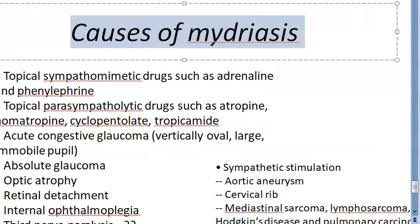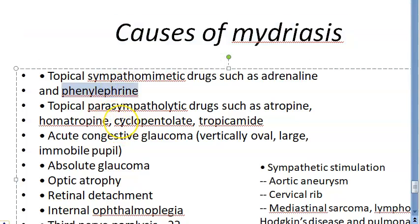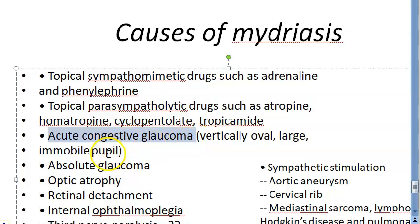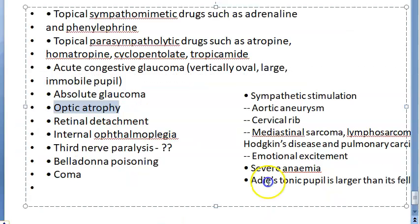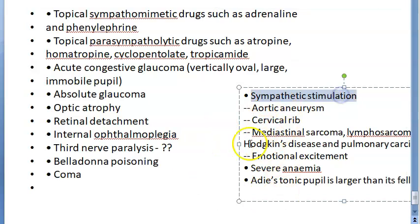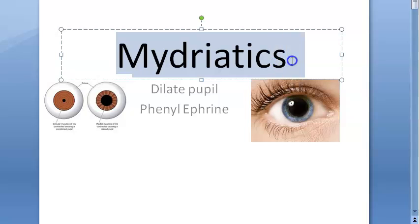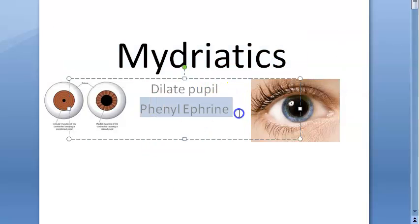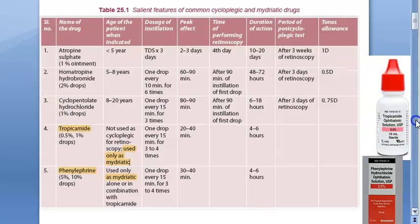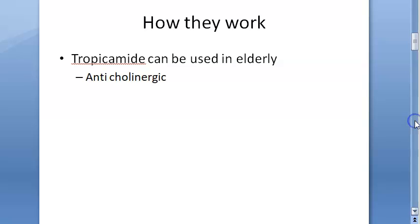Mydriasis can be caused by many things, not just drugs. It can be caused by sympathomimetic drugs like adrenaline and phenylephrine, parasympatholytic drugs like atropine, homatropine, cyclopentolate, and tropicamide. It can also be caused by acute congestive glaucoma, absolute glaucoma, retinal detachment, sympathetic stimulation, emotional excitement, and even light. However, in this video we are concerned only with the drugs — especially phenylephrine and tropicamide. Hope you have understood this video on mydriatics.